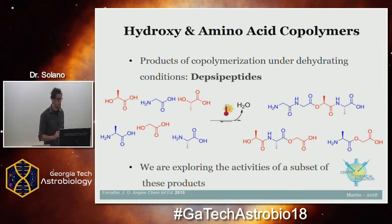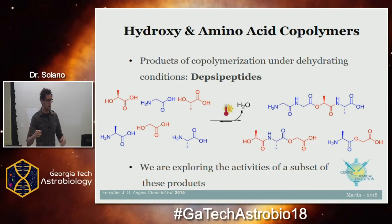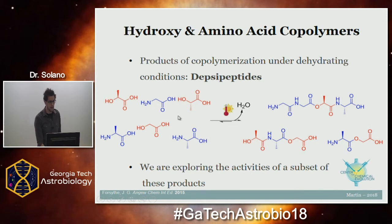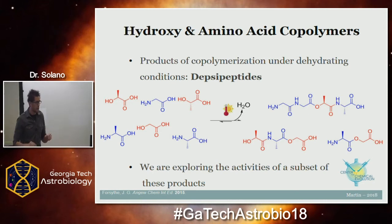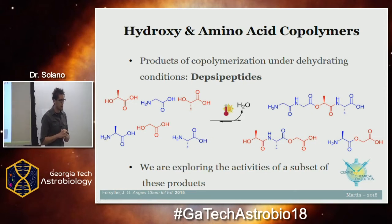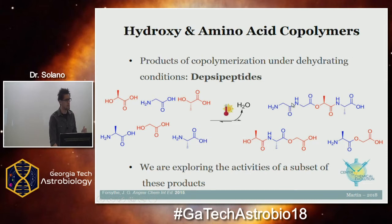A few years ago in the Center for Chemical Evolution, collaborators asked: what if we mix amino acids and hydroxy acids together and simulate prebiotic earth conditions? Under evaporative conditions — having amino and hydroxy acids in solution, heating and evaporating the water off — we drive condensation reactions between them. Because of an ester-amide exchange mechanism, you end up forming copolymers of the hydroxy and amino acids, with many different sequences and lengths. Within this polymer you have both the peptide bond (amide) we see in biology, and also an ester — and that becomes very important.